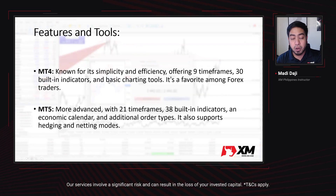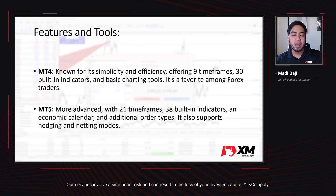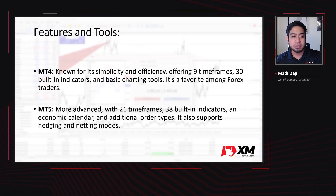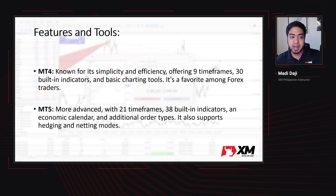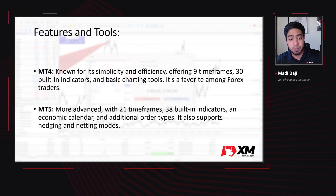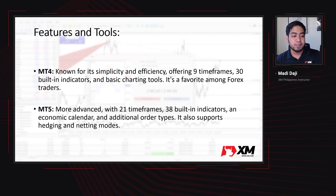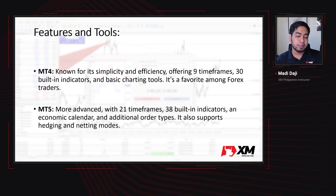Next is the features and tools. MT4 is known for its simplicity and efficiency, offering 9 timeframes, 30 built-in indicators, and basic charting tools. This is the favorite platform among Forex traders. When it comes to MT5, it is more advanced with 21 timeframes, 38 built-in indicators, an economic calendar, and additional order types. It also supports both hedging and netting modes.